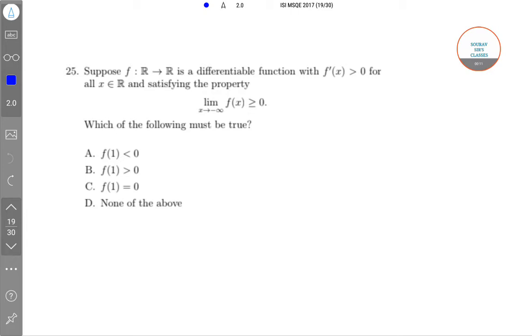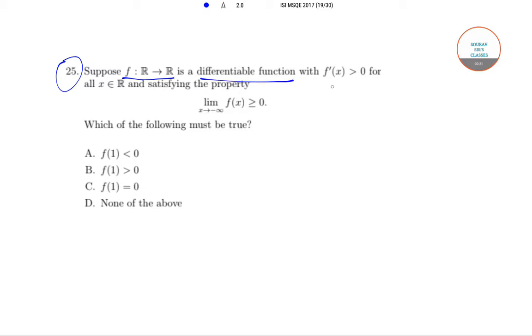Today we will be solving question number 25 from the paper. In question number 25 it is said that suppose f is a function which goes from R to R and f is a differentiable function with f'(x) greater than 0 for all x belongs to R and which satisfies the property limit of f(x) as x tends to minus infinity is greater than or equal to 0.